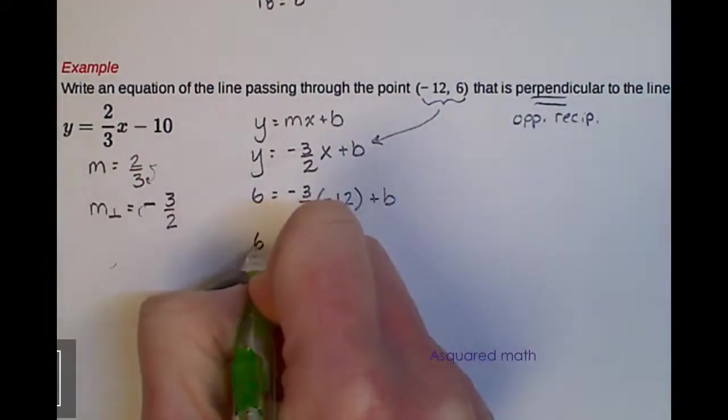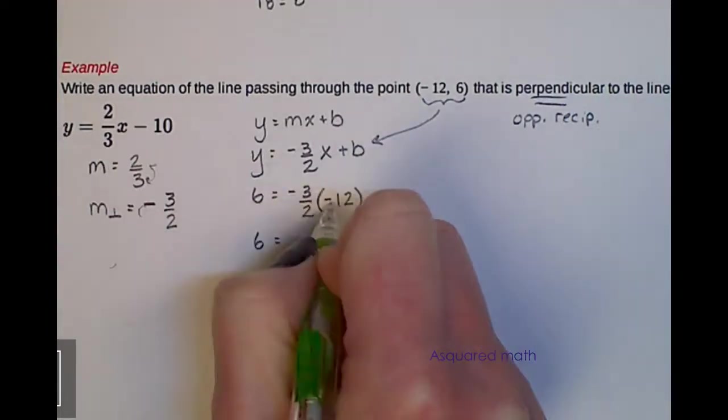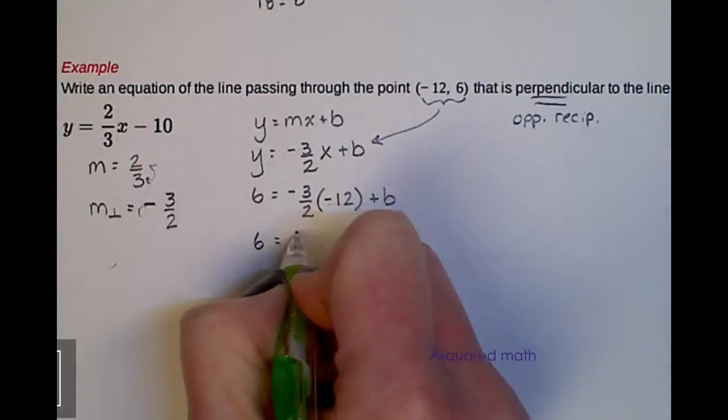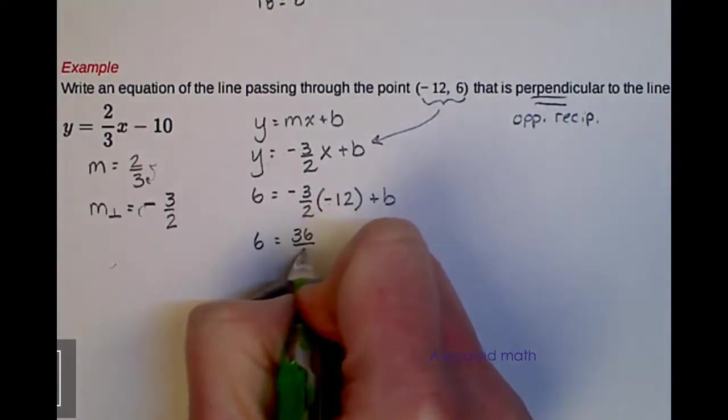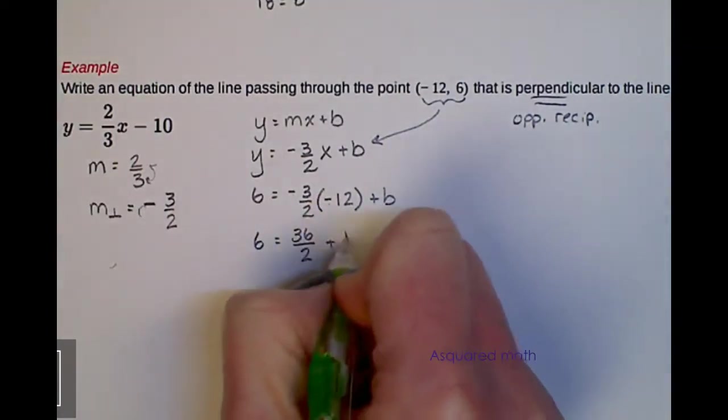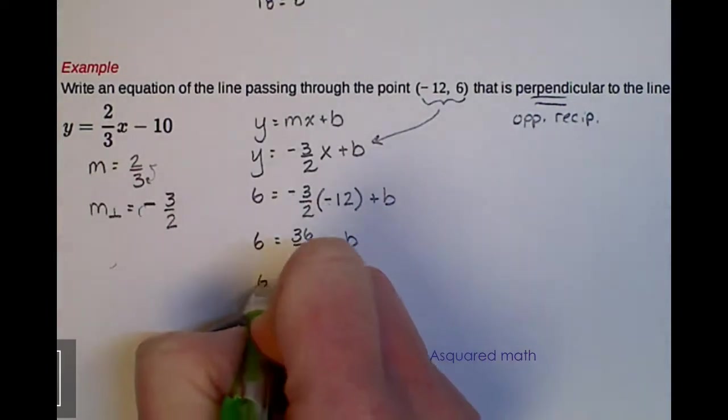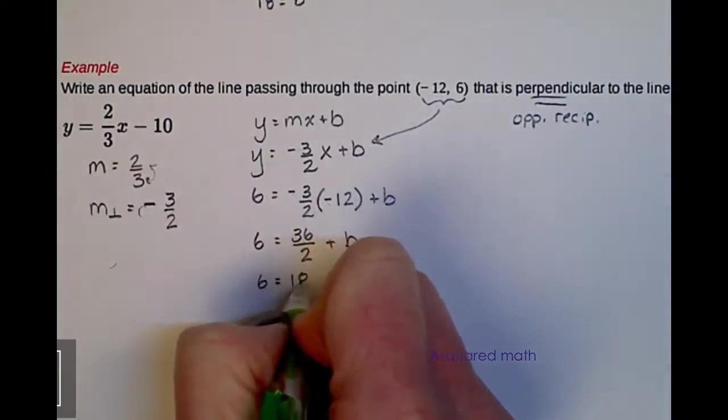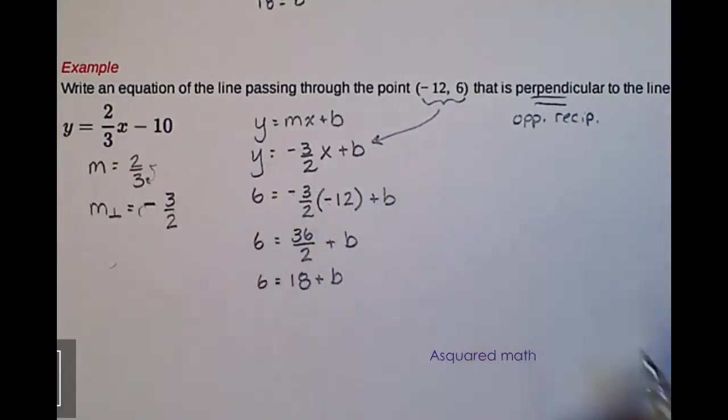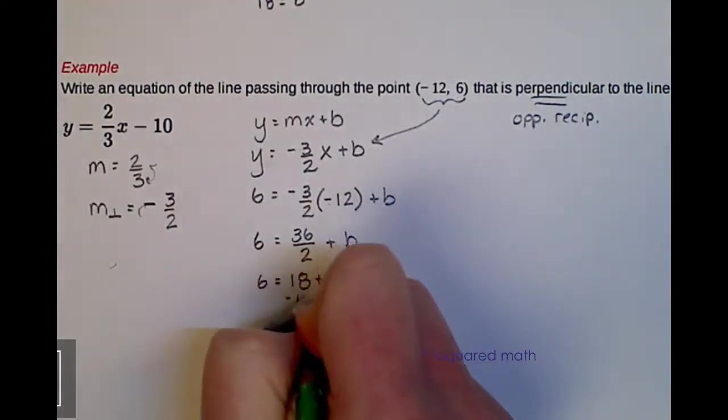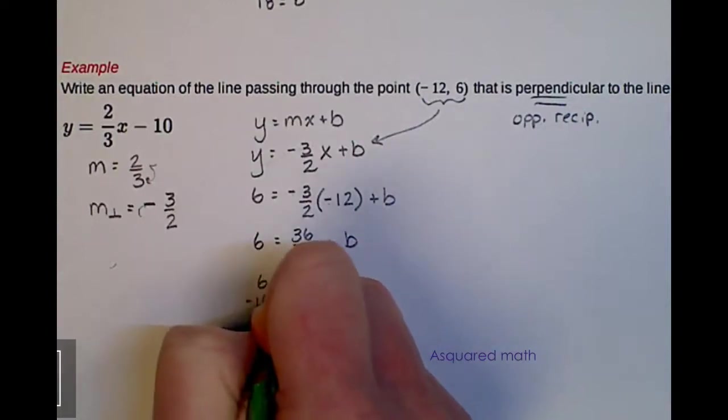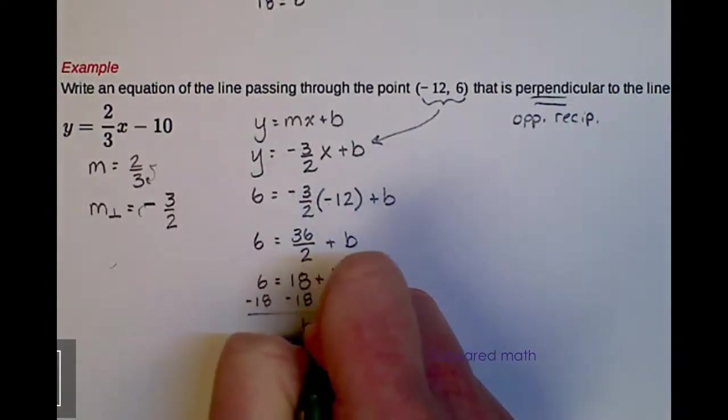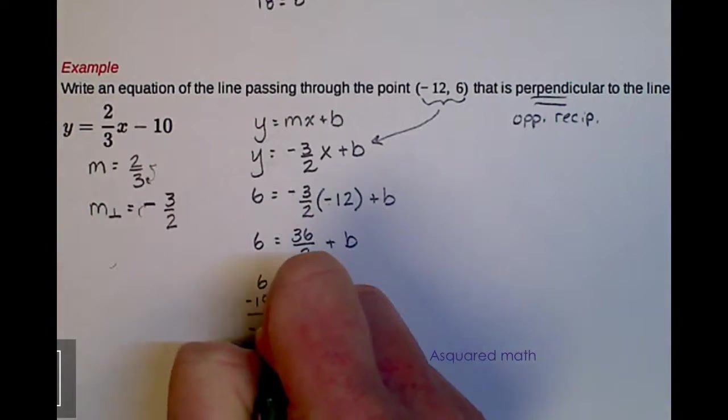So I have 6 equals negative times negative, gives us positive. 3 times 12 is 36, over 2, plus b. 36 over 2 is 18, so we have 6 equals 18 plus b. Subtract 18 from both sides, and we get b equals negative 12.